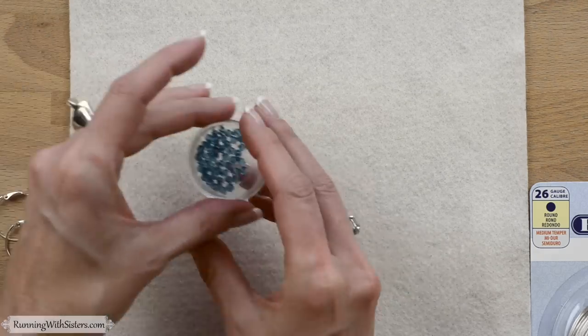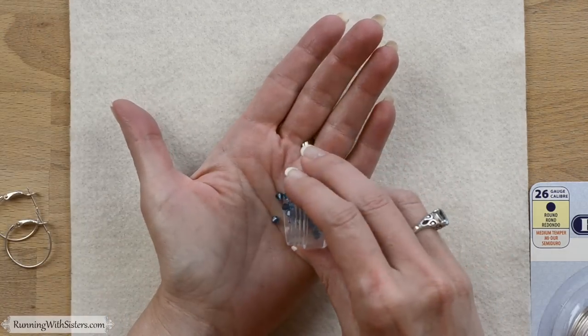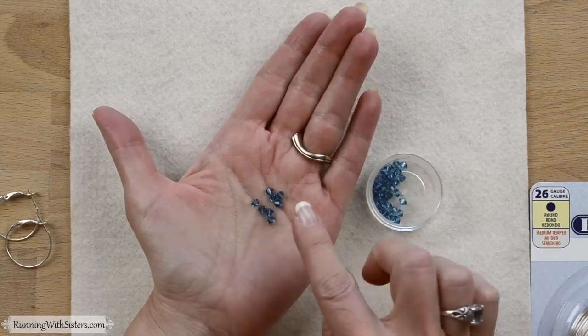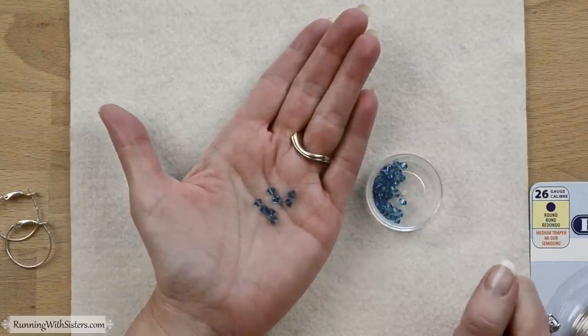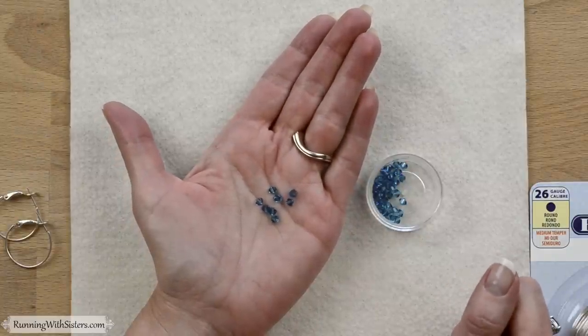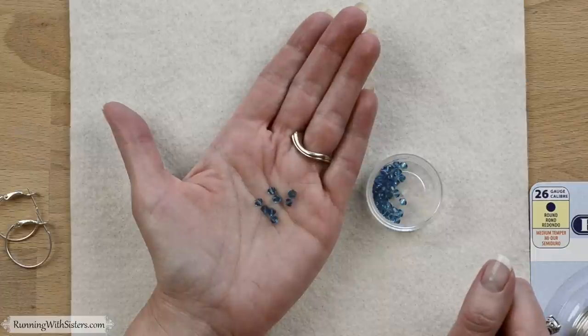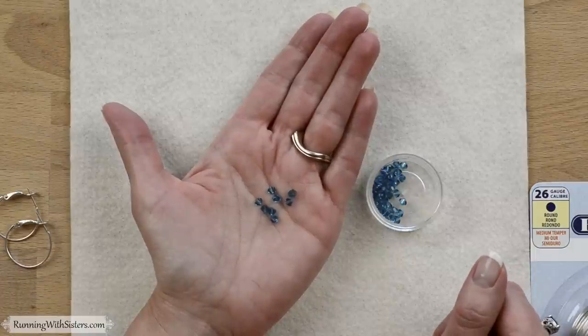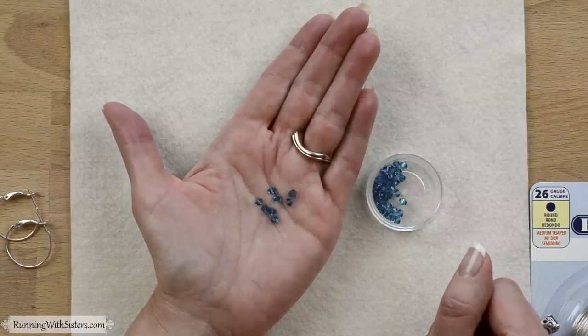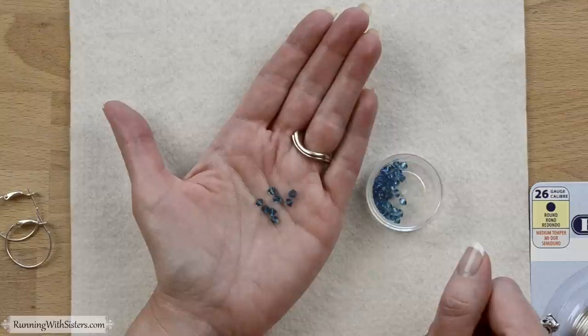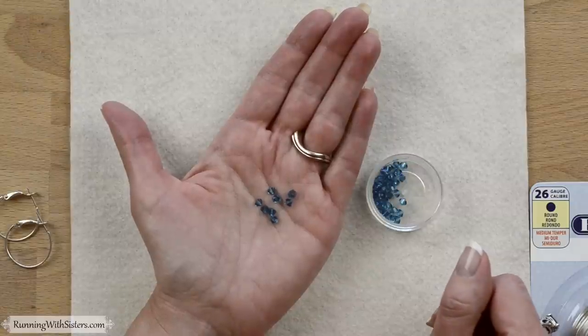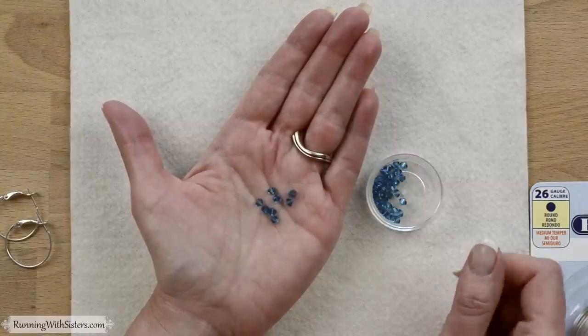And you need bicone crystal beads. These are faceted bicone crystals by Swarovski. We like Swarovski because they're very light and faceted and glamorous. These are three millimeters in size. We need 14 per earring for our hoops. But if your hoops are bigger you might need more bicones. So be sure to adjust your amount based on the size of your hoops.